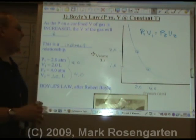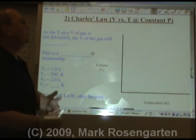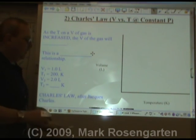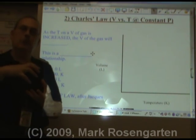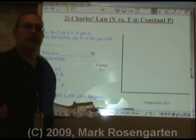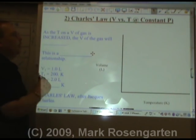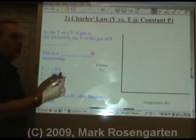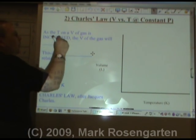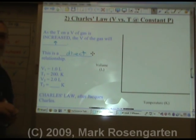Charles' law, named after Jacques Charles, is the relationship between the volume and temperature of a gas at constant pressure. We have a piston with fixed pressure on it — as we heat it, gases expand. As the temperature of a volume of gas is increased, the volume will increase because gases expand when they're heated. This is a direct relationship.